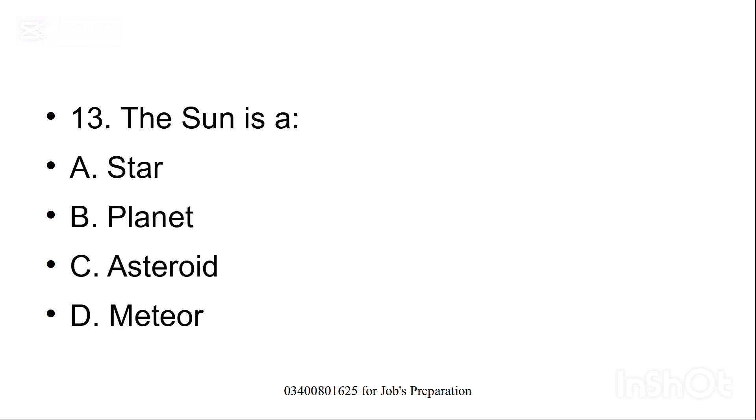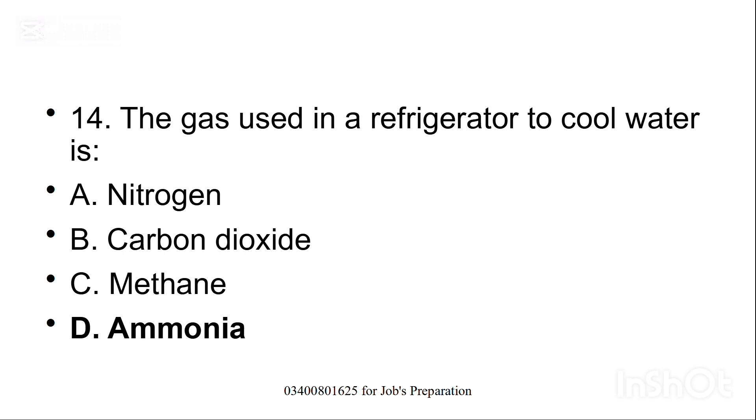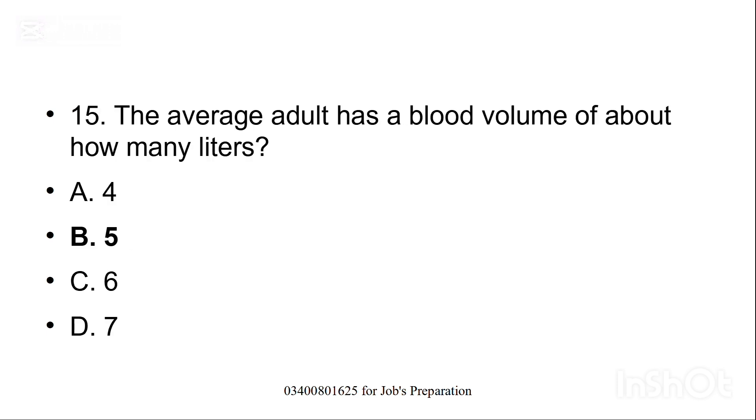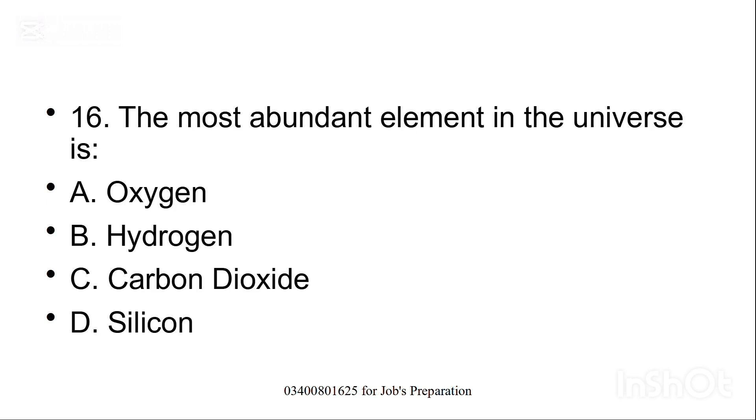The Sun is a star. A is the correct option. The gas used in the refrigerator to cool water is, option D, ammonia is the correct option. The average adult has a blood volume of about how many liters? Option B, five is the correct option.